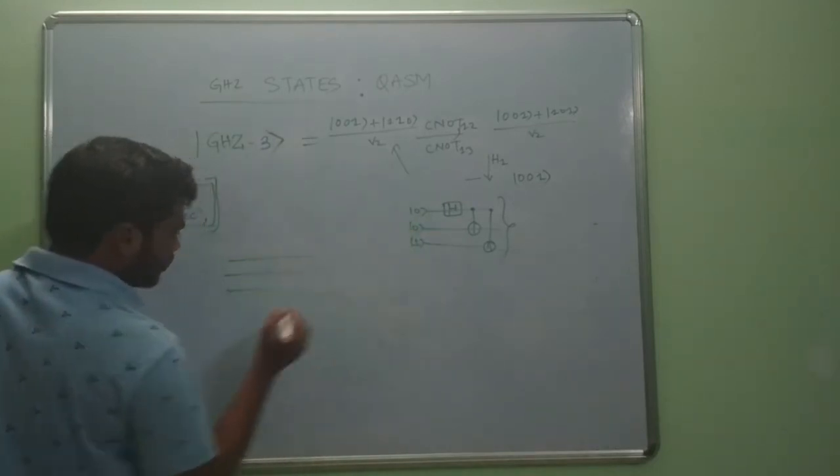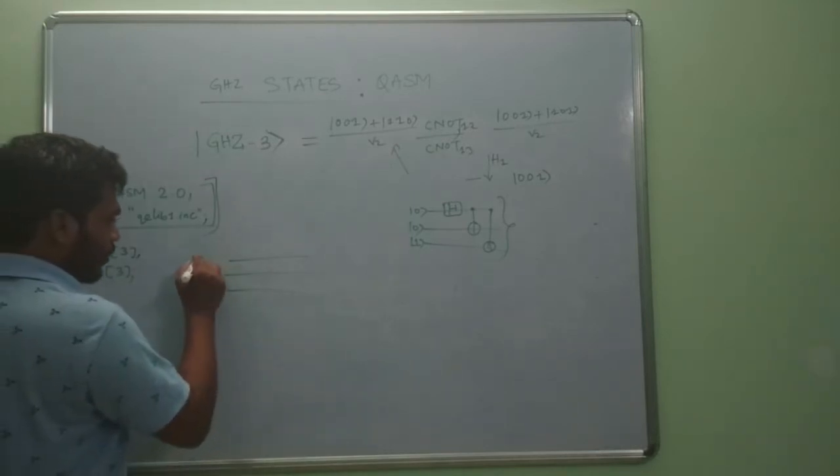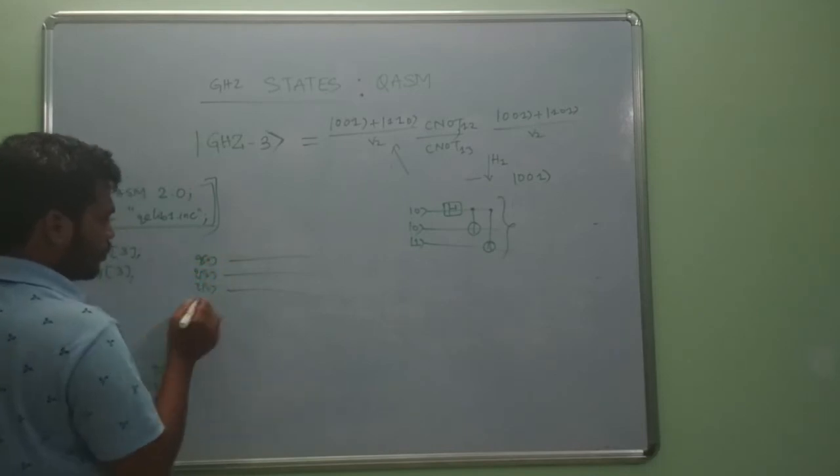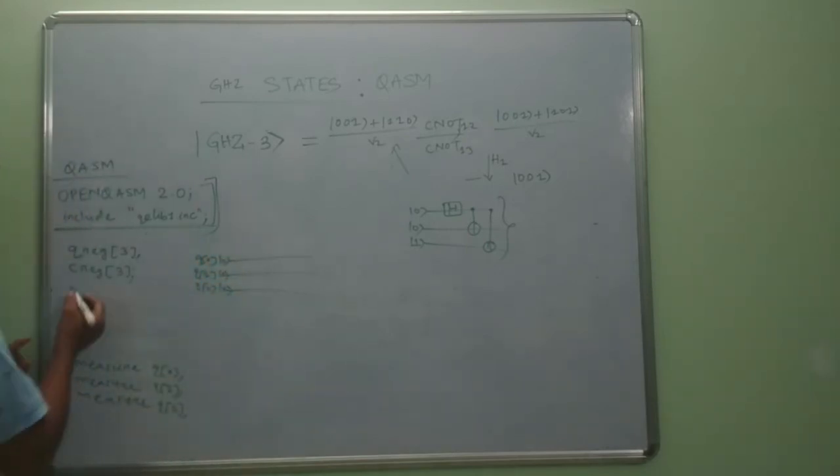For that we write q register in square brackets 3, which will give us three quantum registers named as q0, q1, q2 with initial value 0. Then we will take classical registers.